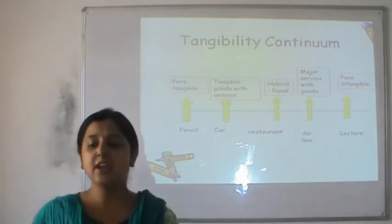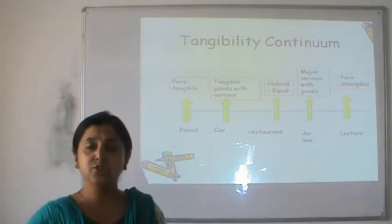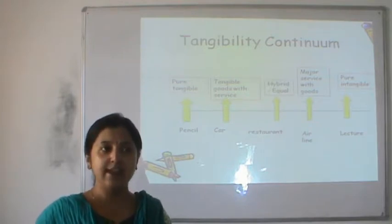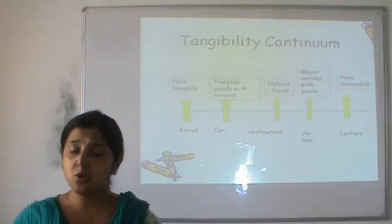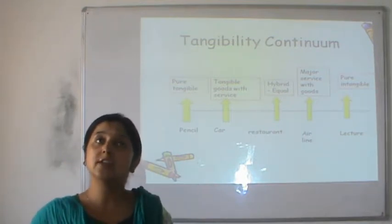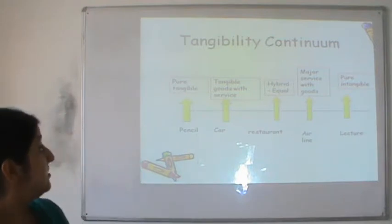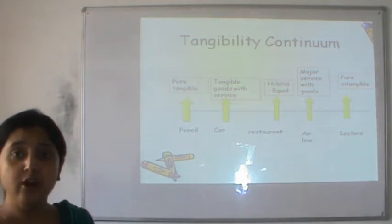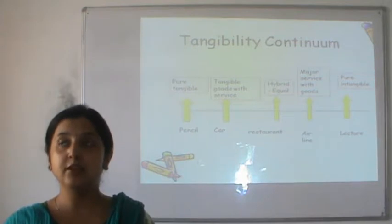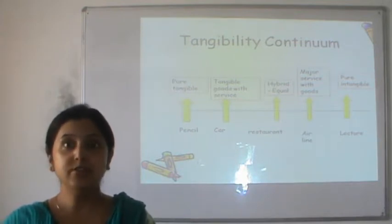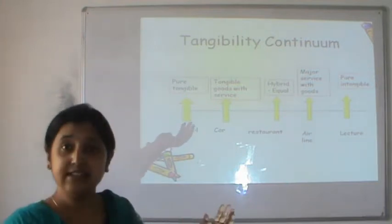A restaurant is almost a hybrid situation. You order food, they give you a table and chair, lighting and air conditioning, drinking water, and perhaps a complimentary welcome drink. It is a hybrid — the food you pay for, you eat there, and if there are leftovers, they provide packaging for you to take home.